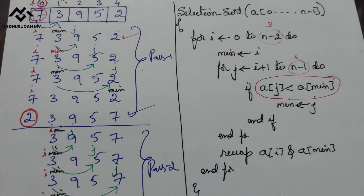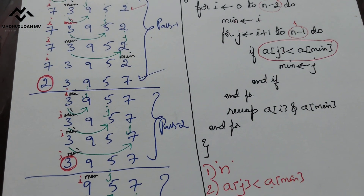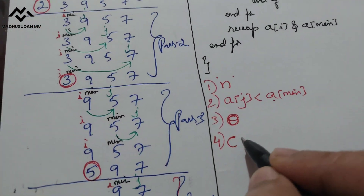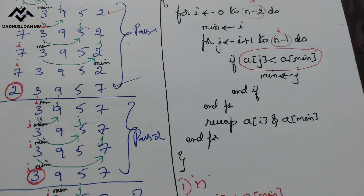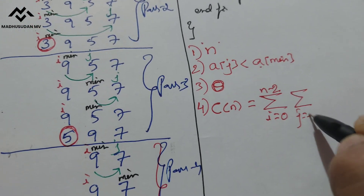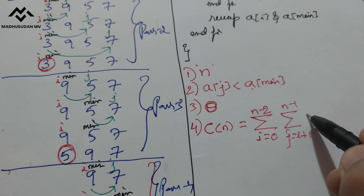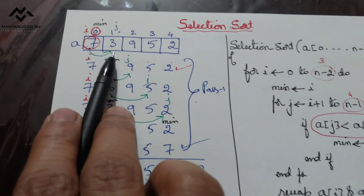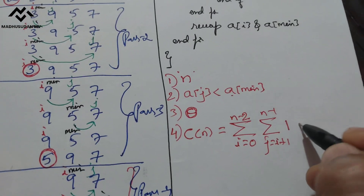Fourth step: we express how many times the basic operation executes. We have two for loops, so two summations. C(n) equals: the outer summation runs from i=0 to n-2, and the inner summation runs from j=i+1 to n-1. For each iteration we execute the comparison operation exactly once.